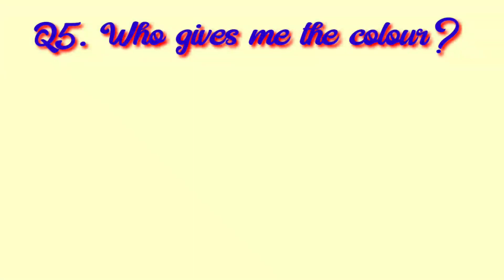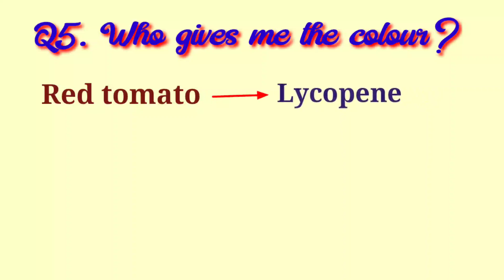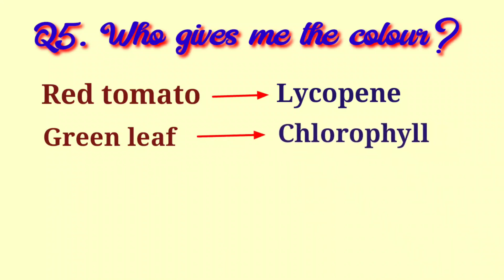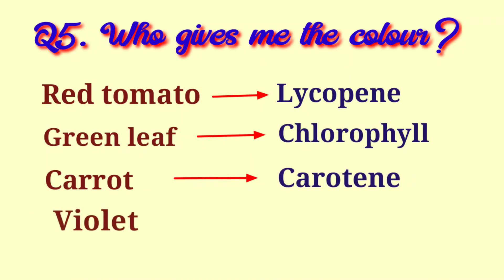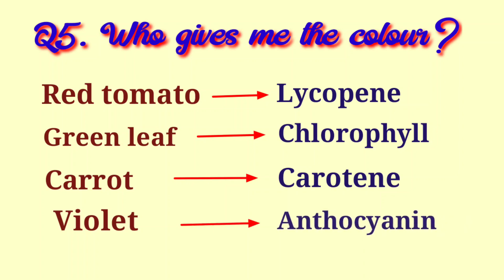Question 5: Who gives me the color? Red tomato — Lycopene. Green leaf — Chlorophyll. Carrot — Carotene. Violet/Purple — Anthocyanin.